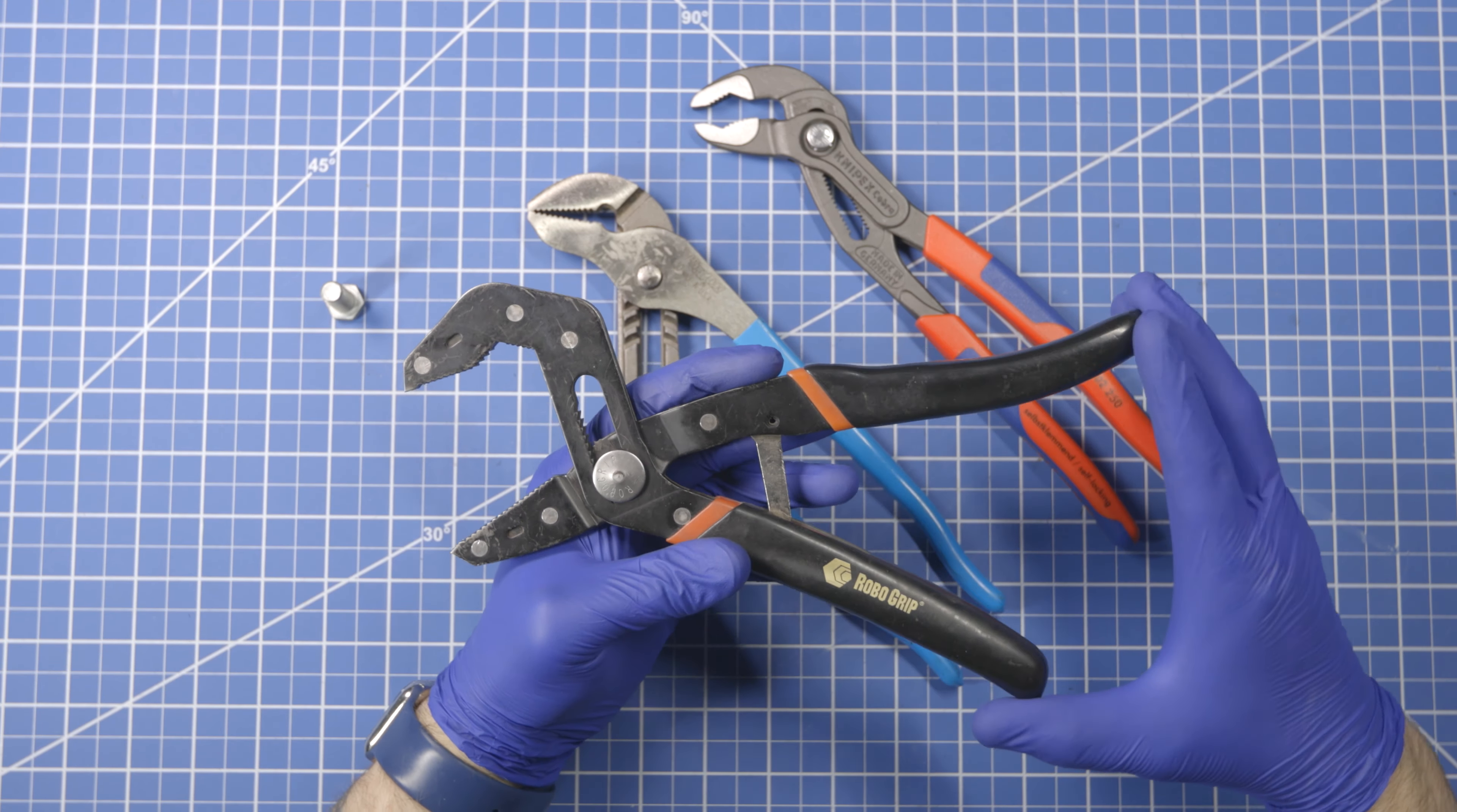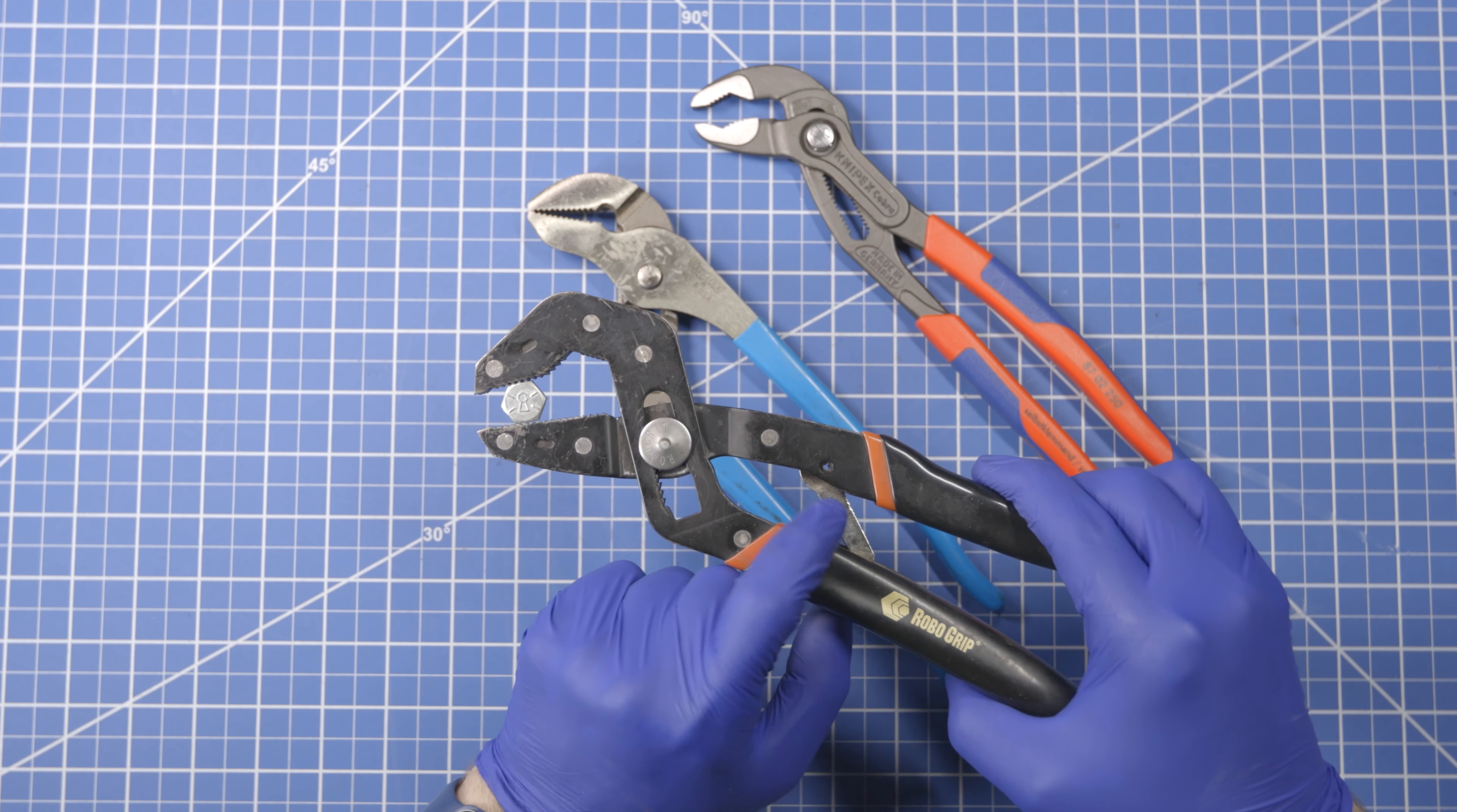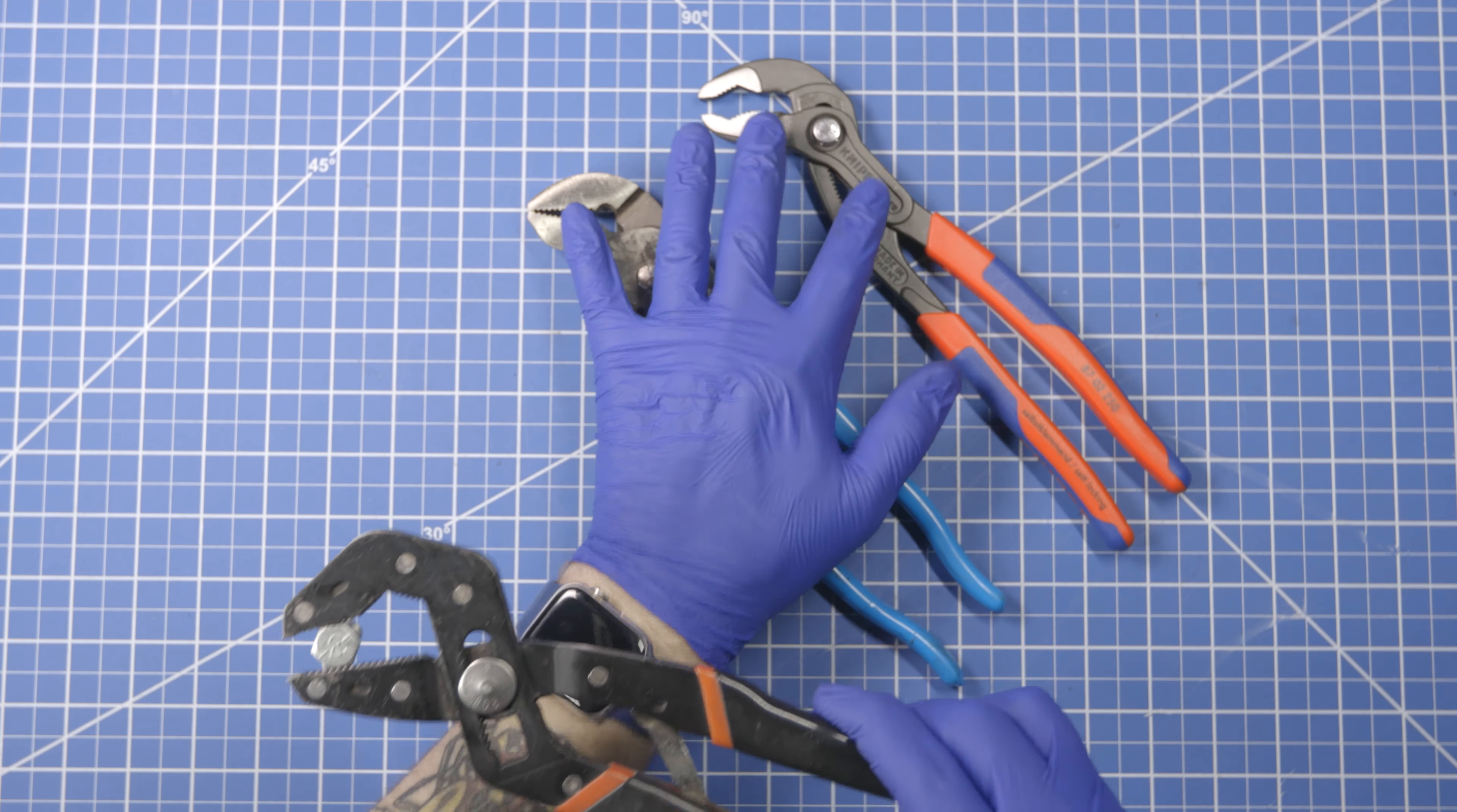And when you put something in the jaws, that pressure causes the pivot to shift from here to here. And when that happens, this is spring loaded, there's a spring inside here pushing up on this little arm.